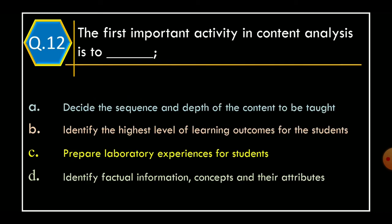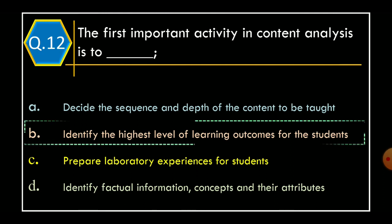Question 12: The first important activity in content analysis is to — Option A: Decide the sequence and depth of the content to be taught; Option B: Identify the highest level of learning outcomes for the students; Option C: Prepare laboratory experiences for students; Option D: Identify factual information, concepts and their attributes. The correct option is Option B: Identify the highest level of learning outcomes for the students.